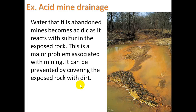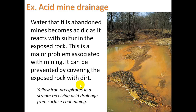Acid mine drainage is when water that fills abandoned mines becomes acidic as it reacts with sulfur in the exposed rock, making sulfuric acid. It's a major problem associated with mining. It can be prevented by covering the exposed rock with dirt, and some areas don't even look like mines anymore because they've been covered up with new vegetation growing on top. Here we see yellow iron precipitates in a stream receiving acid drainage from surface coal mining.